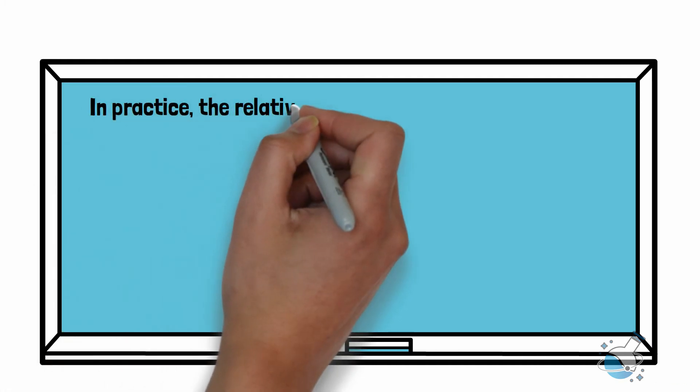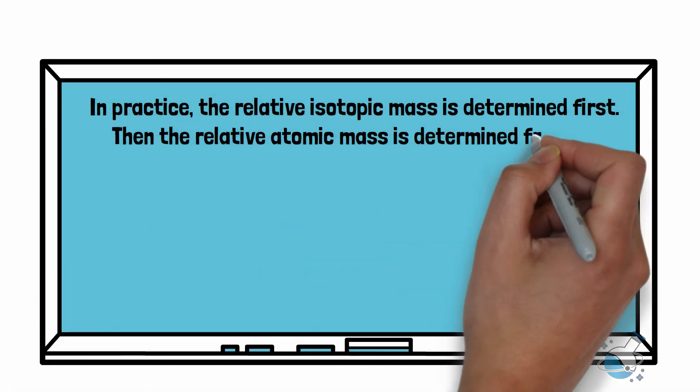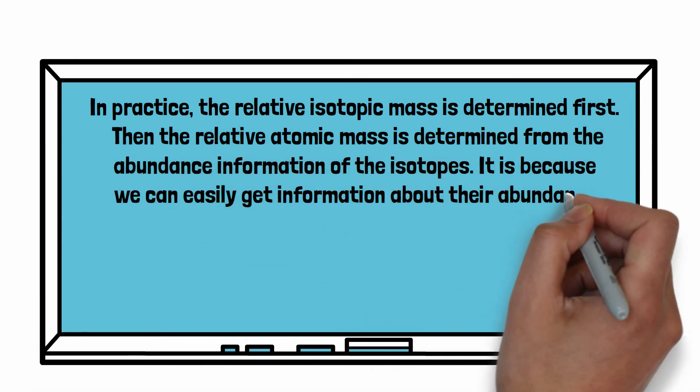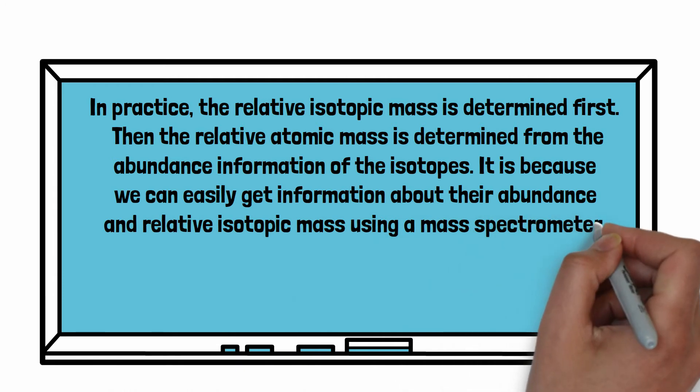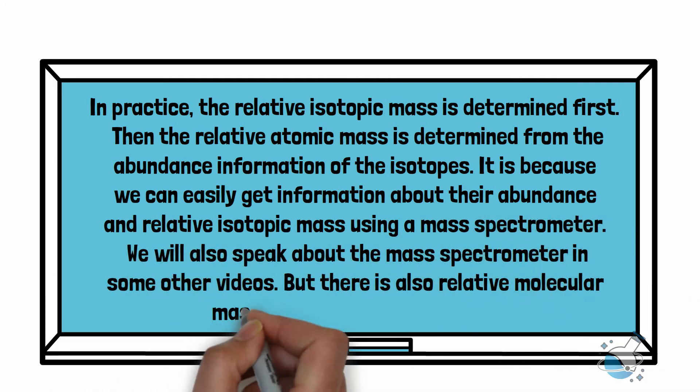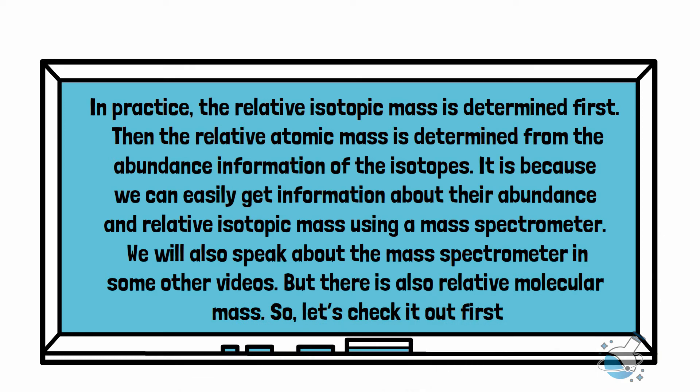In practice, the relative isotopic mass is determined first. Then the relative atomic mass is determined from the abundance information of the isotopes. It is because we can easily get information about their abundance and relative isotopic mass using a mass spectrometer. We will also speak about the mass spectrometer in some other videos.